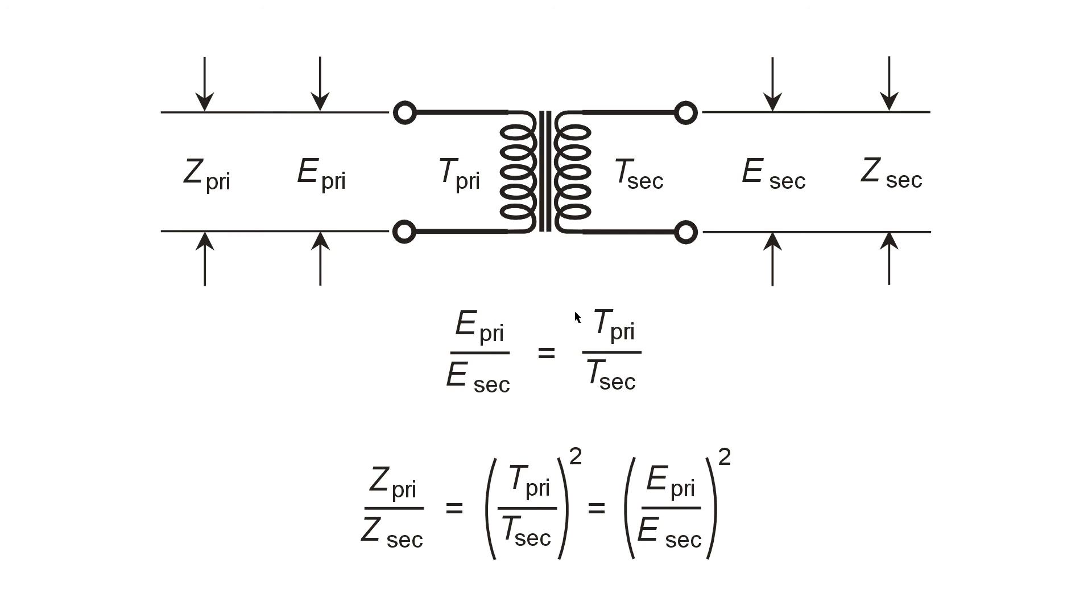The voltage transformation ratio equals the turns ratio from primary to secondary, whereas the impedance transformation ratio equals the square of the turns ratio from primary to secondary, or the square of the voltage transformation ratio from primary to secondary.